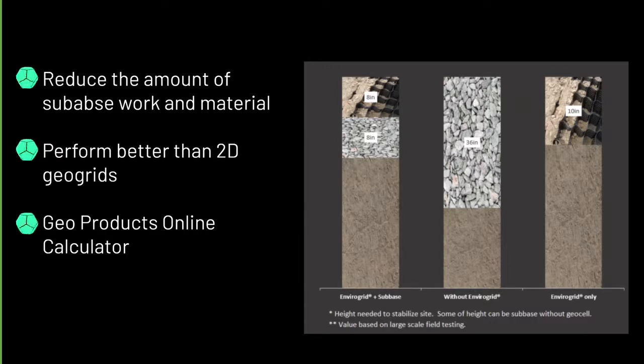We do provide this calculator on our website. For this scenario, just as an example, we put in some loading characteristics, and we found that if we were just going to use stone, we would need 36 inches of stone. Whereas, if we use some EnviroGrid, if we did 8 inches of base work with stone, and then 8 inches of EnviroGrid filled with any type of drain material, we would get the same performance as 36 inches of stone by itself. Or, we could just do 10 inches of EnviroGrid as well. We'd do two layers of EnviroGrid to get to that 10 inches.